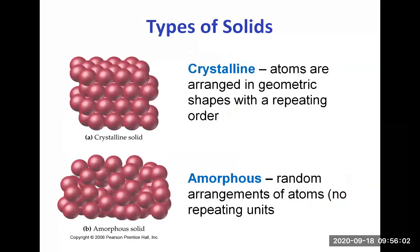So there are two types of solids. We can classify them as crystalline solids or amorphous solids. And the difference is in the arrangement. In the crystalline solids, the atoms are arranged in geometric shapes with a repeating order. And in the amorphous solid, there is a random arrangement of the atoms. So no repeating units. You can see that it's not ordered anymore. Atoms are packed in both cases, but there is no order in the amorphous solid versus the crystalline solid.